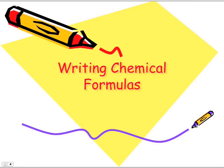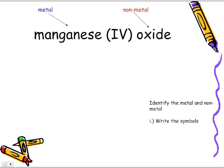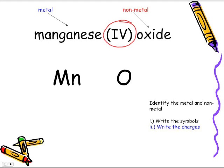Now let's look at writing chemical formulas. Manganese(IV) oxide — we identify metal and non-metal. A hint that we have a metal/non-metal is the Roman numeral; if you see Roman numerals, or the Latin name with an OUS or IC ending, you know it's a metal/non-metal. Write the symbol: manganese is Mn, oxide is O. We don't need to look at the periodic table for manganese's charge because it's right there — plus four. For oxide, we refer to the periodic table: it is minus two.